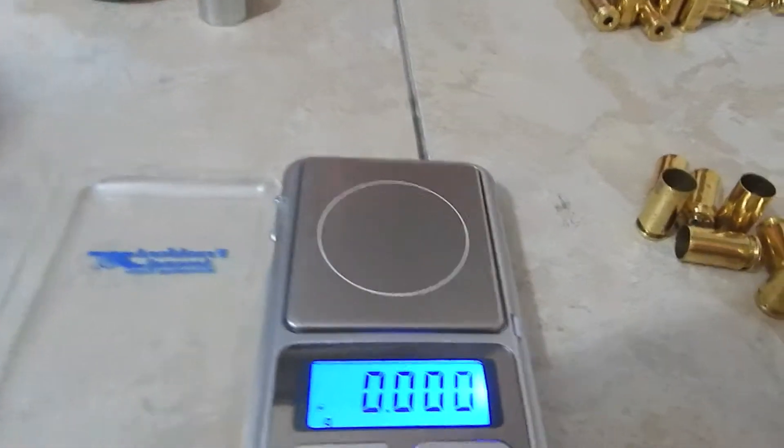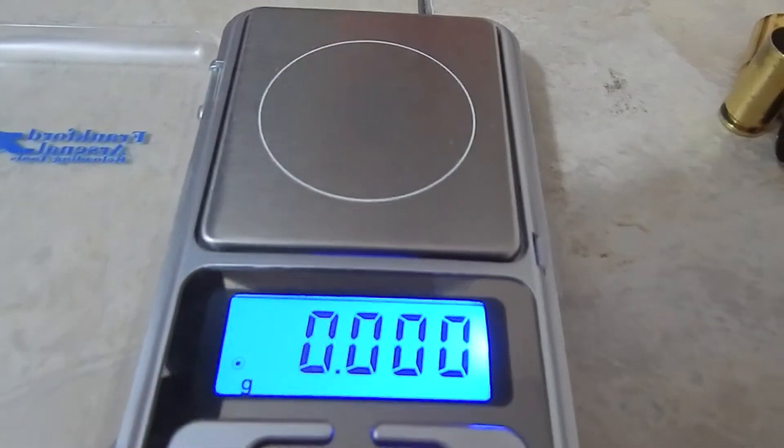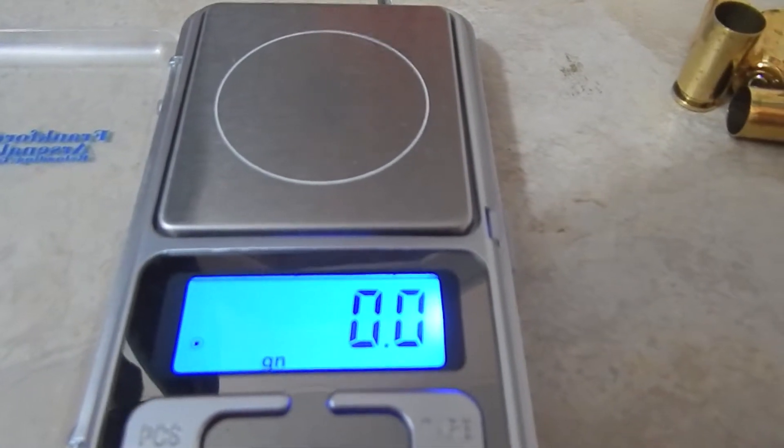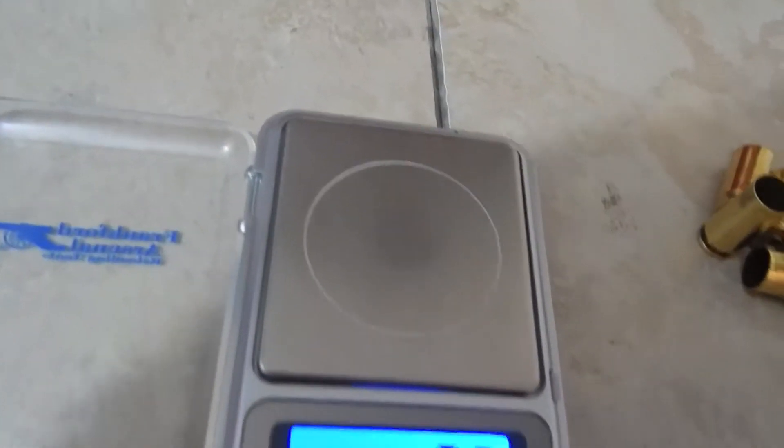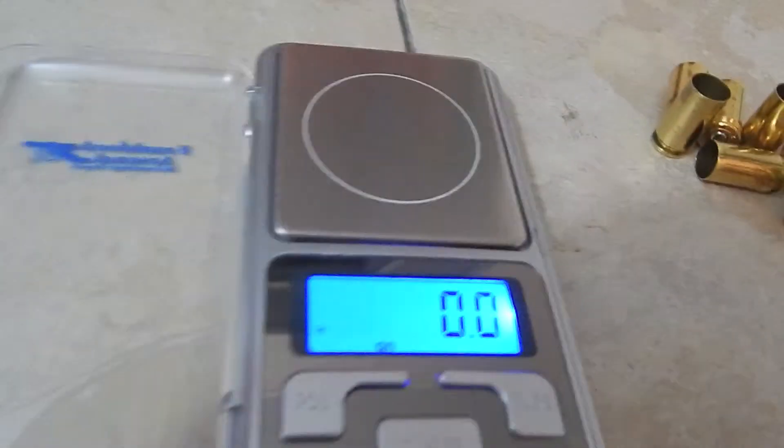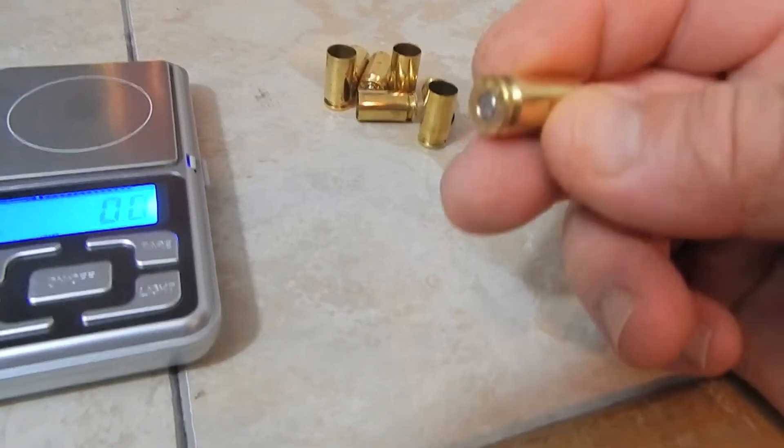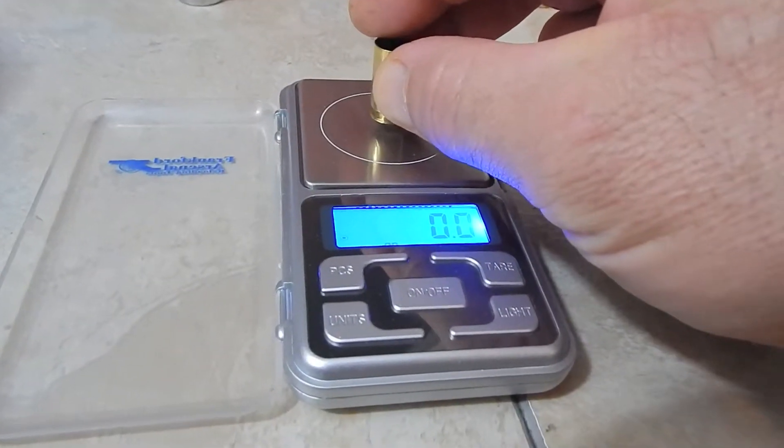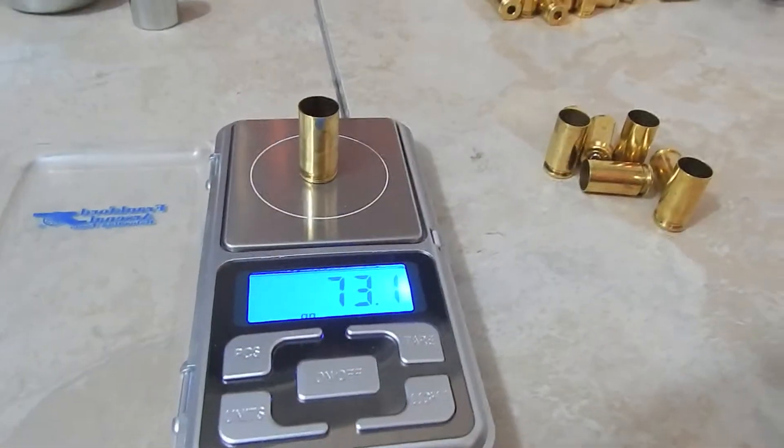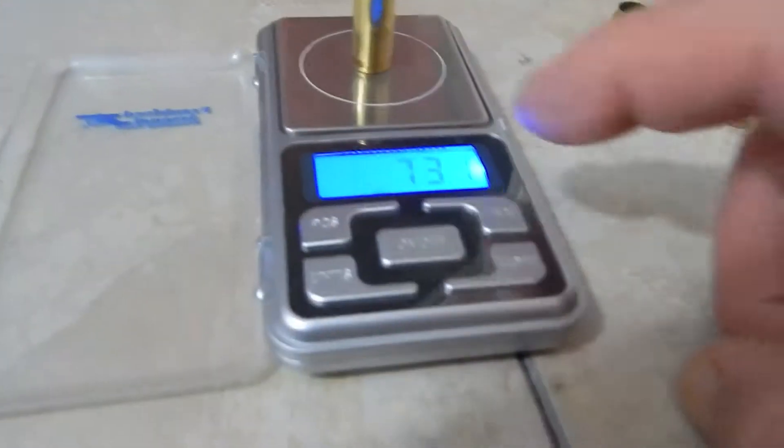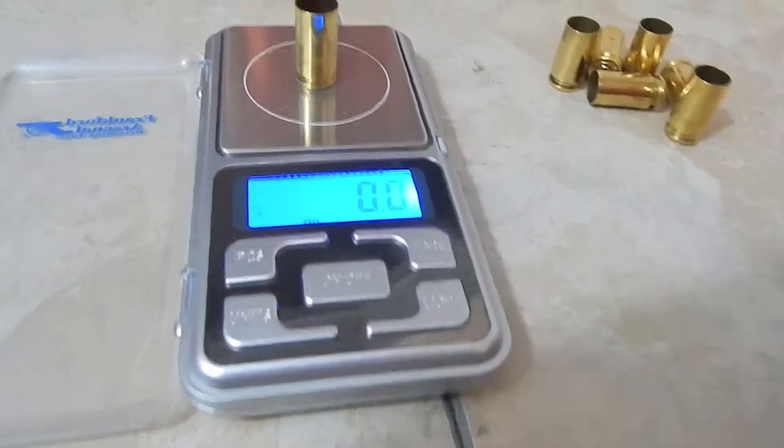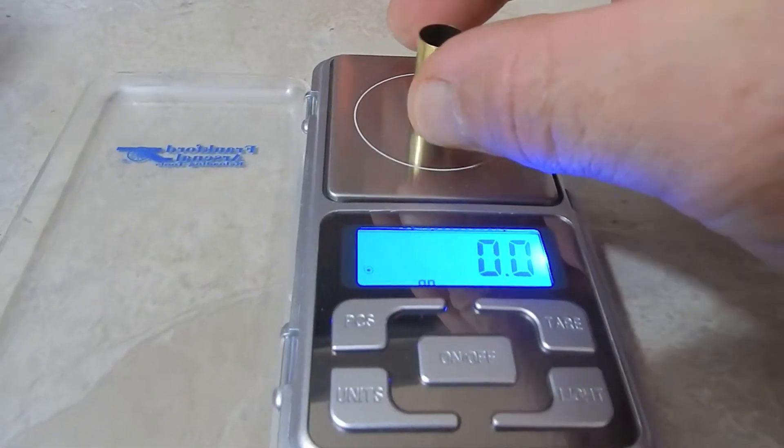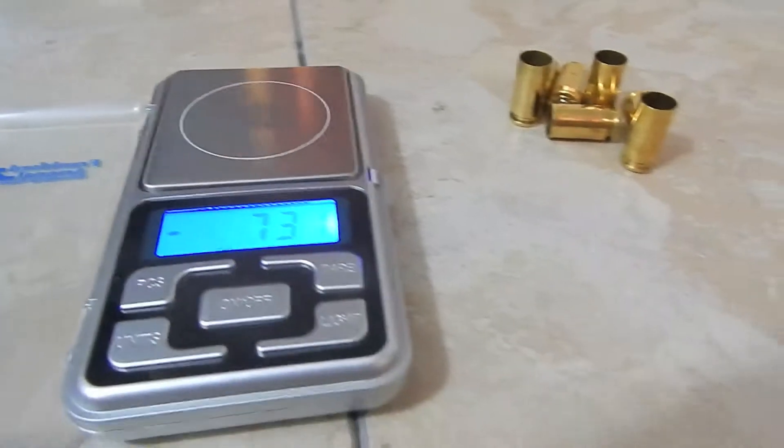Now we're going to go over to units again. It is showing in grams right now. We're going to hit the units button until we have it on grains. I'm going to grab one of my 40 casings with a primer in it, set it on the scale and hit tare weight. Zeroes it out with that casing on there. That way we'll know the exact amount of gunpowder we have in there.